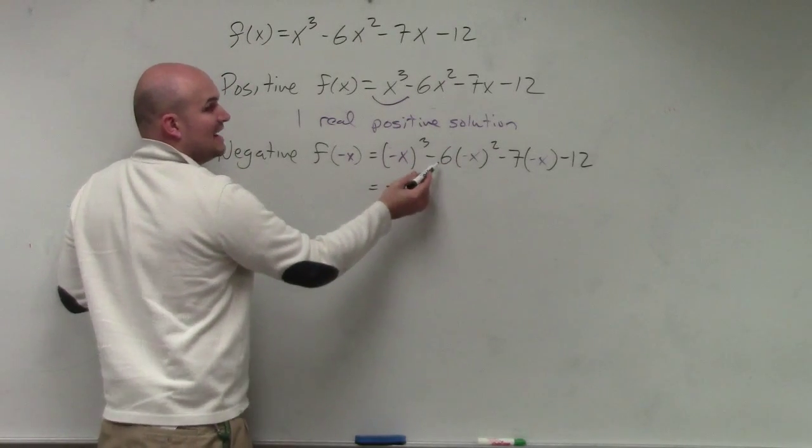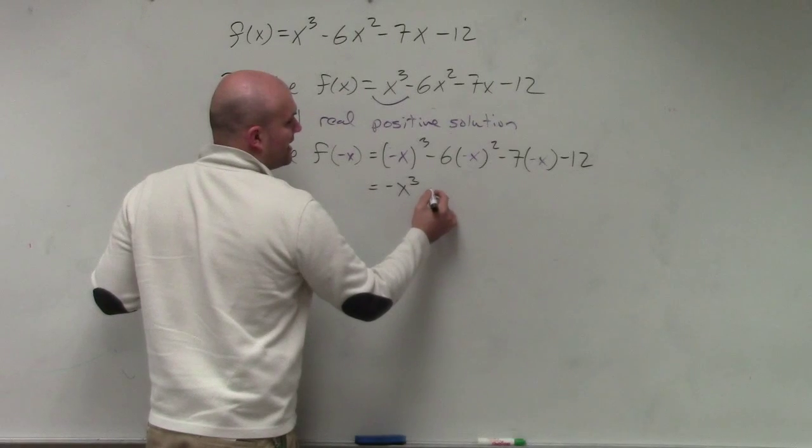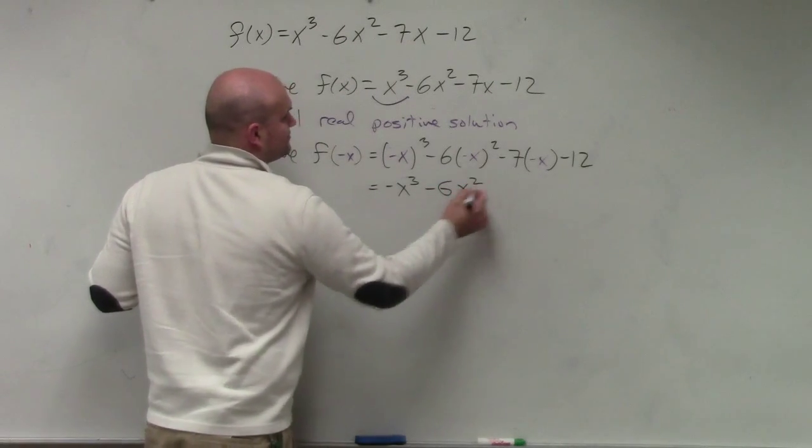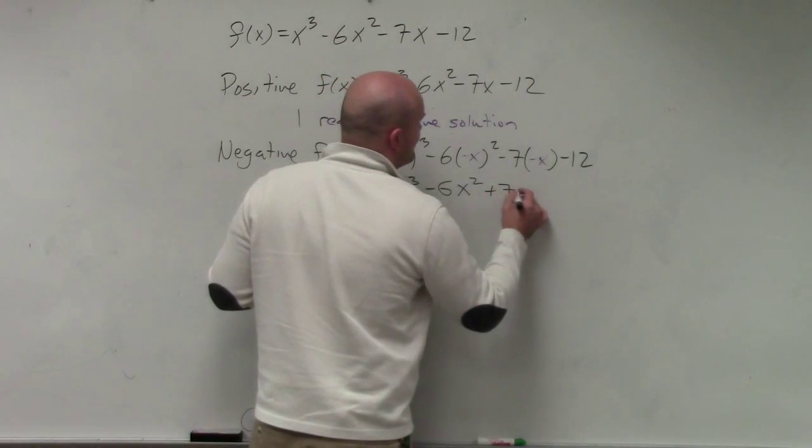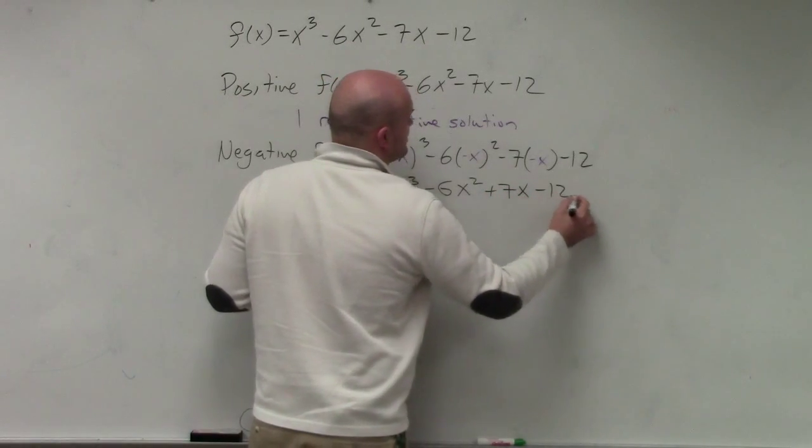But positive x squared times negative 6 is now a negative 6 x squared. Negative 7 times negative x is now a positive 7 x minus 12.